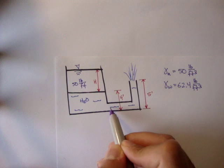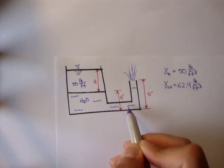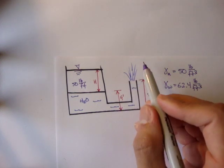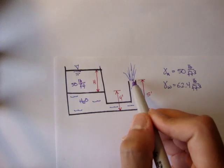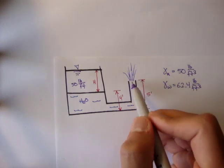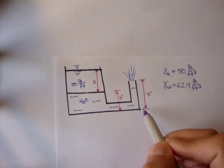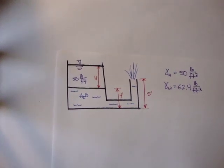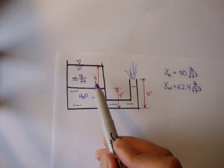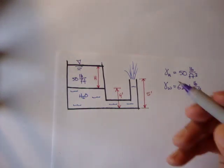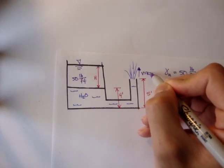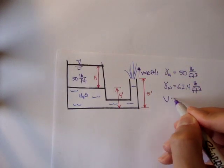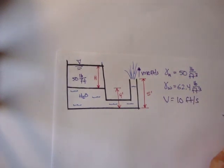The tank continues into a pipe, and it comes from the pipe up here, and up here is a free jet. The weight of this unknown liquid is pushing down, causing water to shoot out from this pipe, which is 5 feet from the bottom of the tank. They're asking: determine h — what is h — if the velocity of this water shooting out is 10 feet per second.